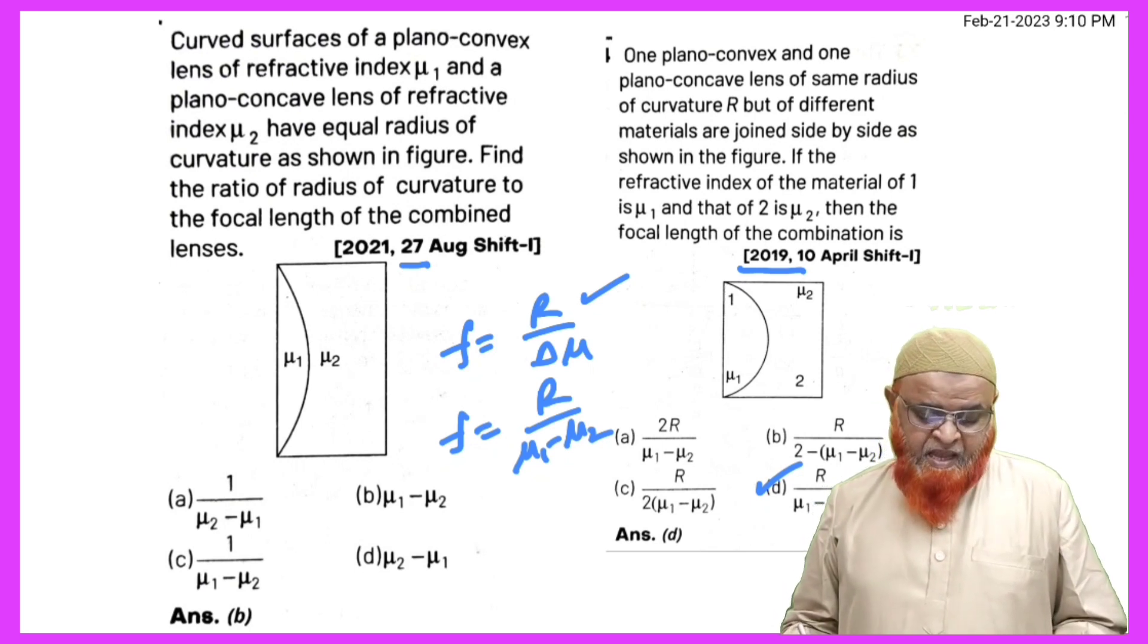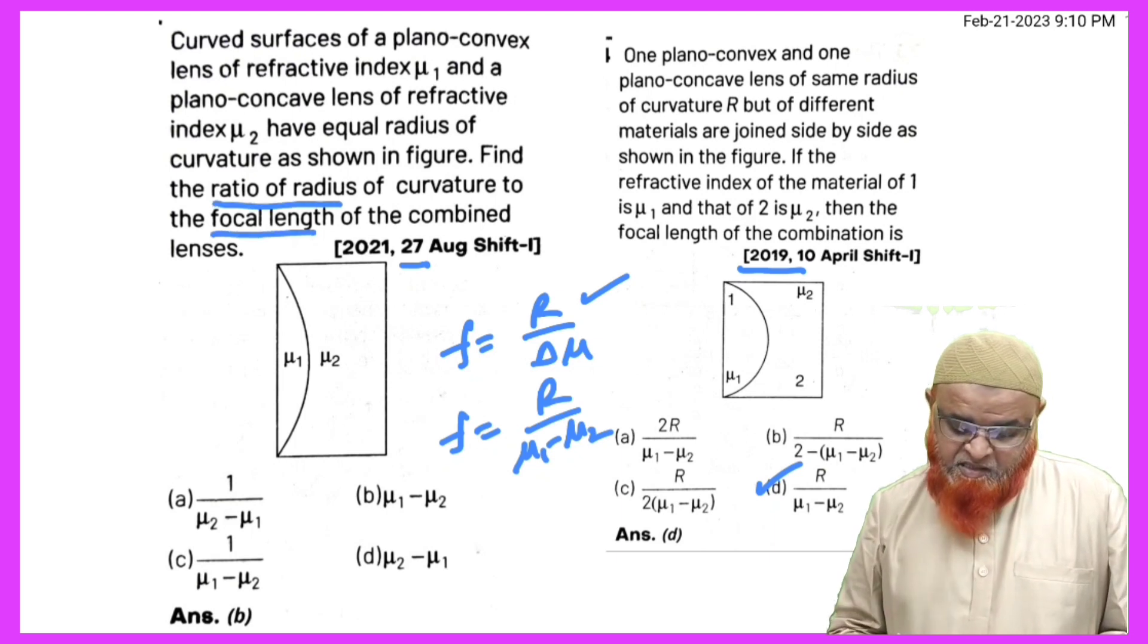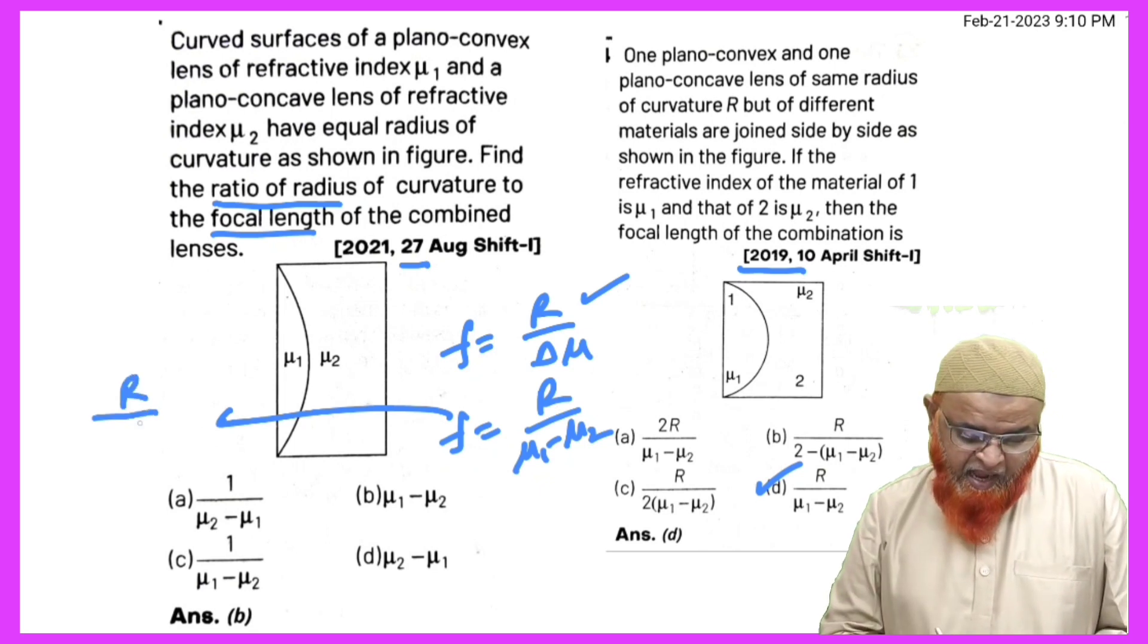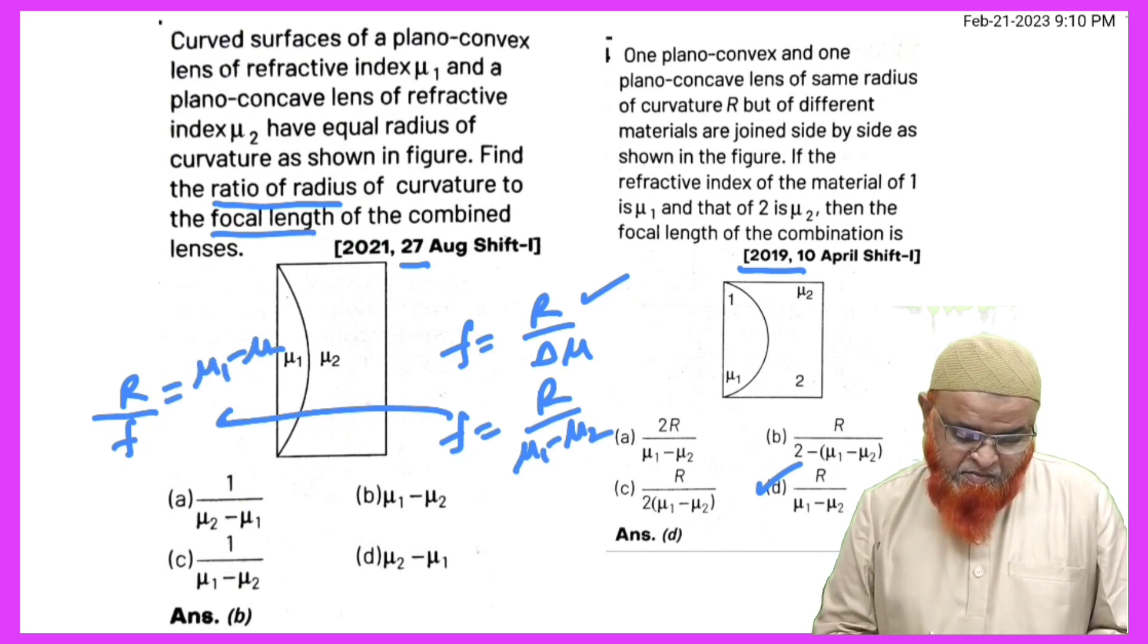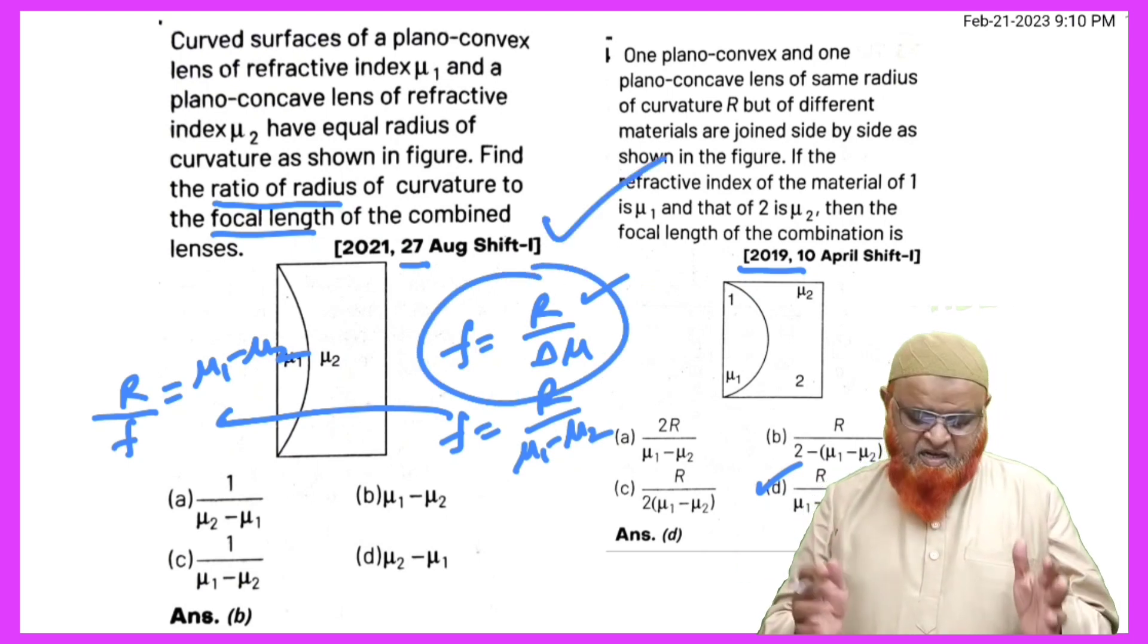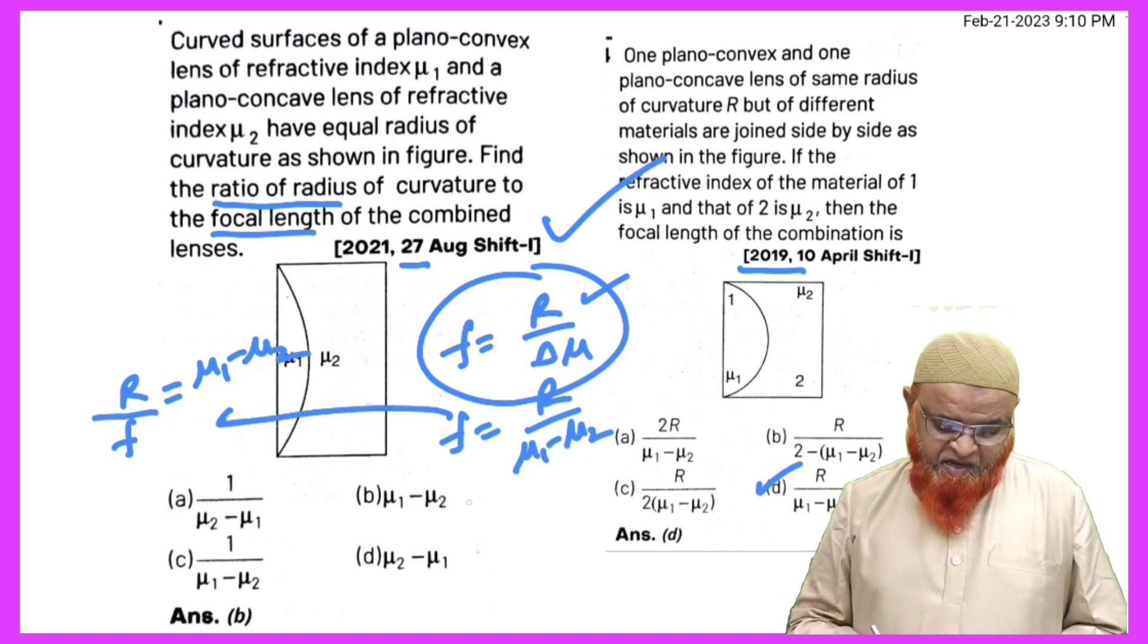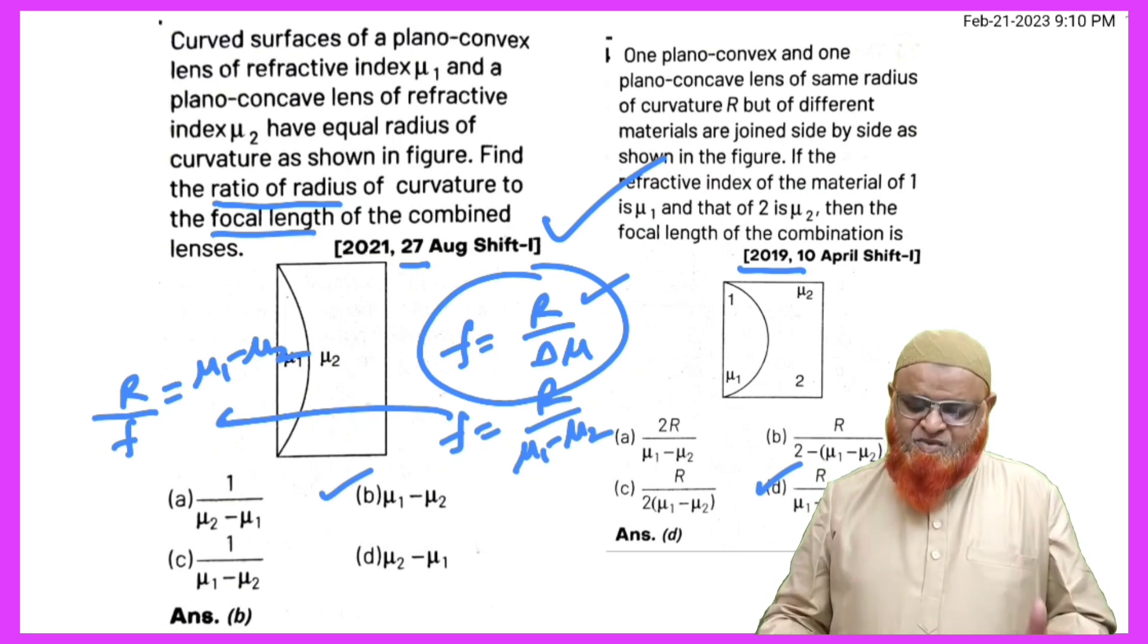So from this formula, the ratio of radius - first you take R, and F in the denominator on the right side, it will become μ₁ minus μ₂. You just remember this formula then you can solve both the problems at a time. So R by F, radius by focal length, is going to be μ₁ minus μ₂, so B is going to be the correct option. Hope you have understood this.